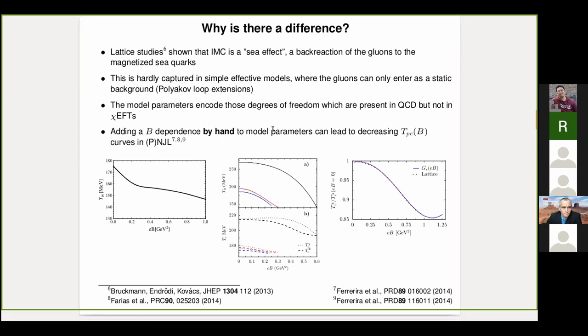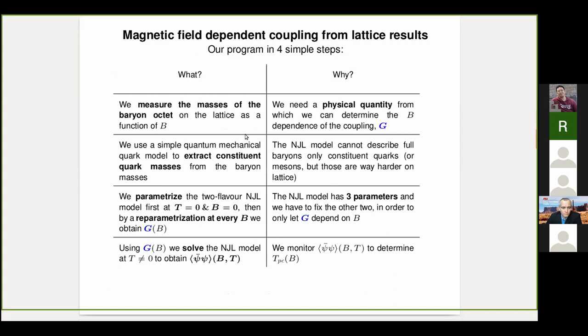In order to capture this behavior with the magnetic field, one has to introduce a B-dependence for the model parameters, and we've seen some examples of this today. What I want to show is a physically motivated and systematic way of doing this using lattice data. The program of what we did can be quickly summarized in four steps.